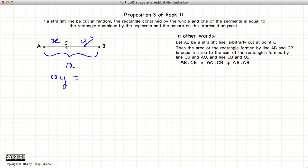will equal to this segment CB squared, or Y squared, plus the rectangle formed by AC and CB, or in other words, equals to X times Y.